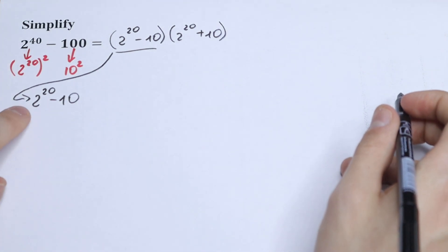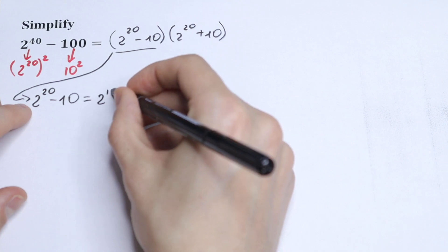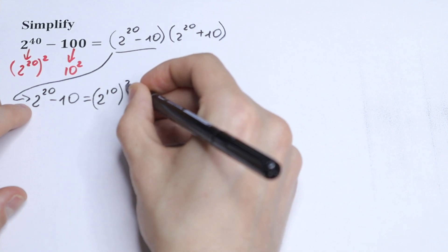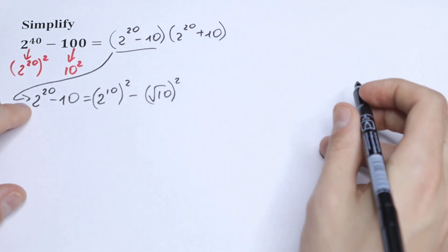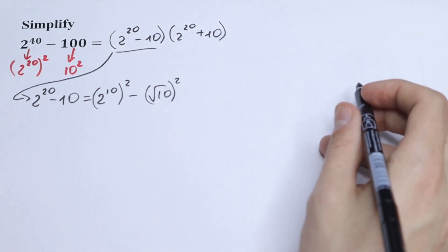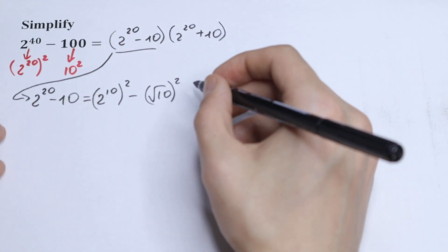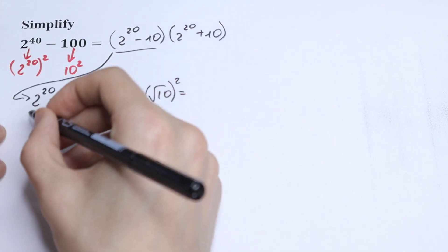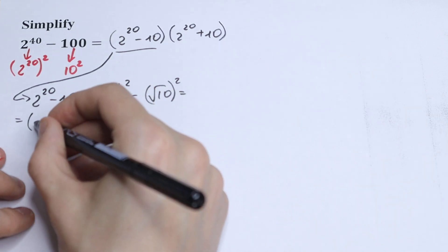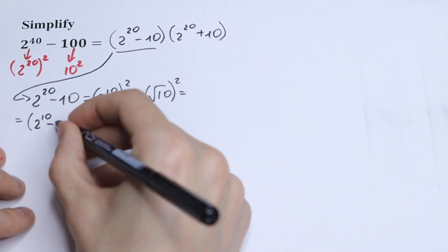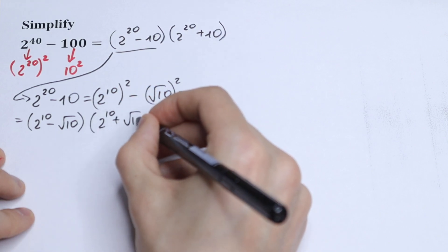We use the same logic: write 2 to the 20th power as (2 to the 10th power) squared, and 10 as (square root of 10) squared. We have a difference of squares again, so we apply the formula. The result is (2 to the 10th power minus square root of 10) times (2 to the 10th power plus square root of 10).